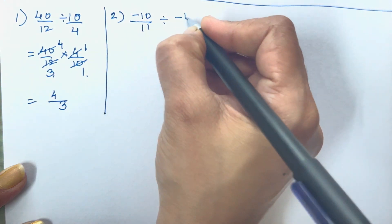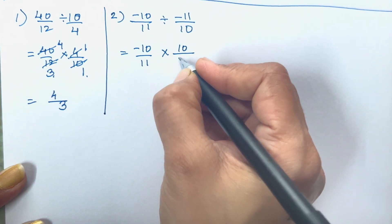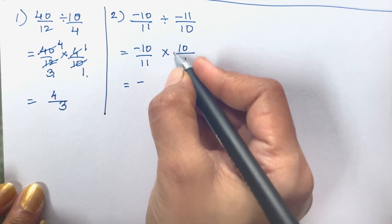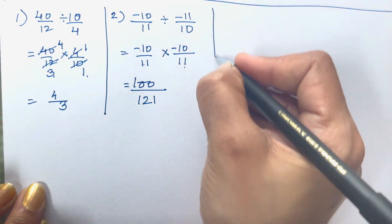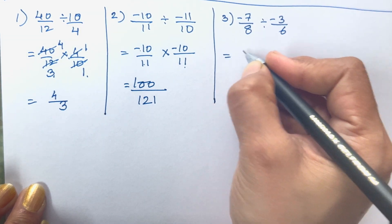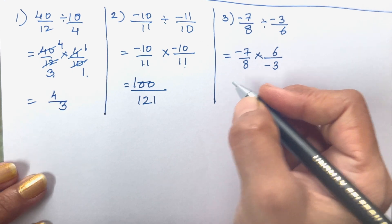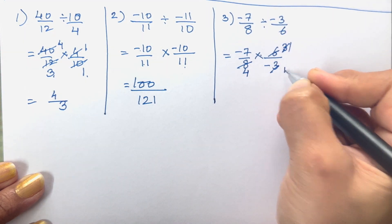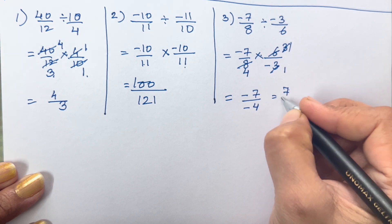Minus 10 upon 11 divided by minus 11 upon 10: the first number stays as is, division changes to multiplication, and the second fraction is reciprocated to 10/11. So minus 10 × minus 10 = 100 and 11 × 11 = 121, giving 100 upon 121. For minus 7/8 divided by minus 3/6: keep −7/8 and reciprocate to multiply by 6/−3. After reducing, minus 7 over minus 4 = 7 upon 4.